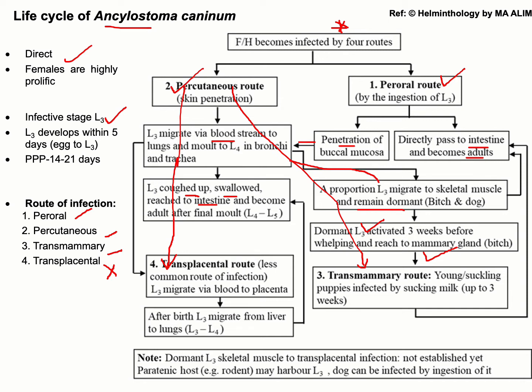The young pups or puppies are infected after consuming milk containing L3. This L3 reaches the small intestine of the puppies, where development of the adult parasite occurs.